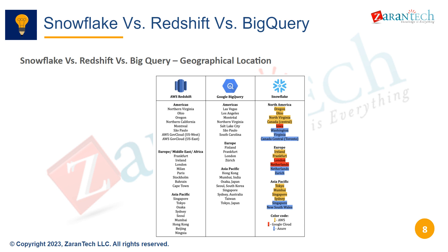This chart shows the geographic presence of the three platforms. Snowflake and Redshift are available in all commercial AWS regions globally, while BigQuery is available in a limited number of Google Cloud locations.